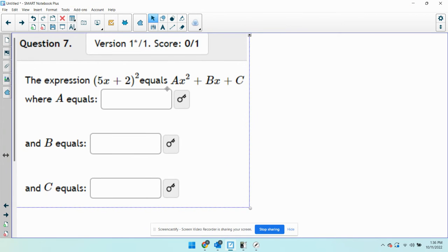Okay, so this says the expression 5x plus 2 squared equals some polynomial with a, b, and c values. So we're just going to figure out what a, b, and c equals.